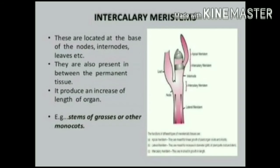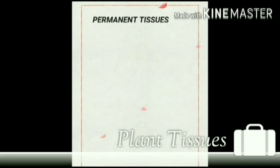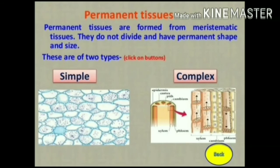Intercalary meristem produces an increase in the length of the organ. These are the different types of meristematic tissues. Plants also have another type of tissue — permanent tissue. It helps in the movement of water from the root to the stem. Permanent tissues are formed from meristematic tissue and do not divide; they have a permanent shape and size.